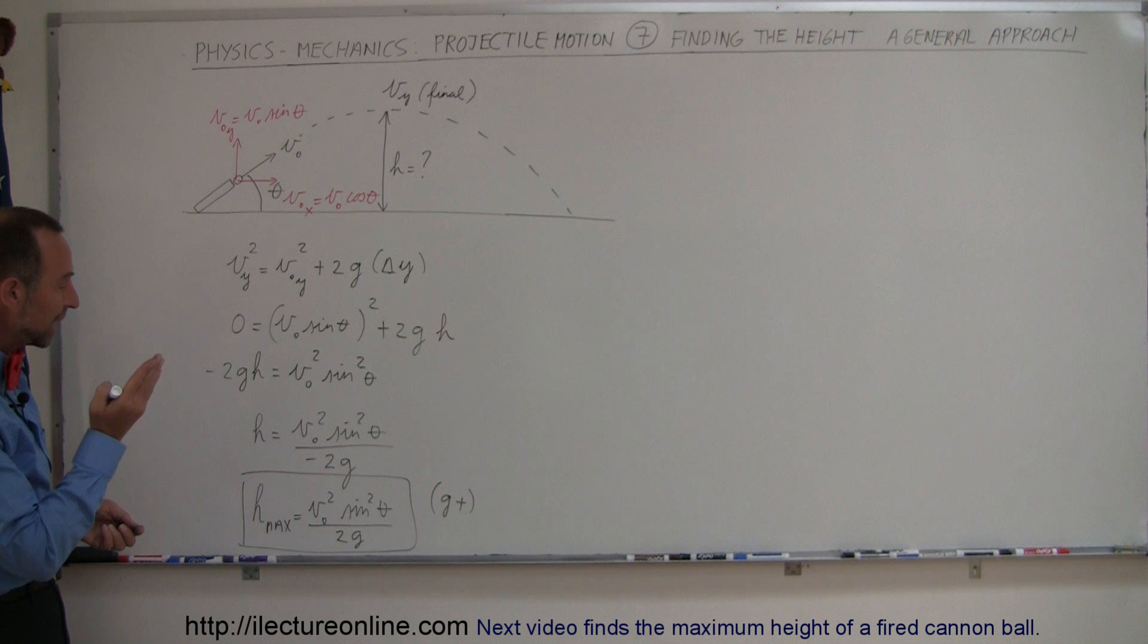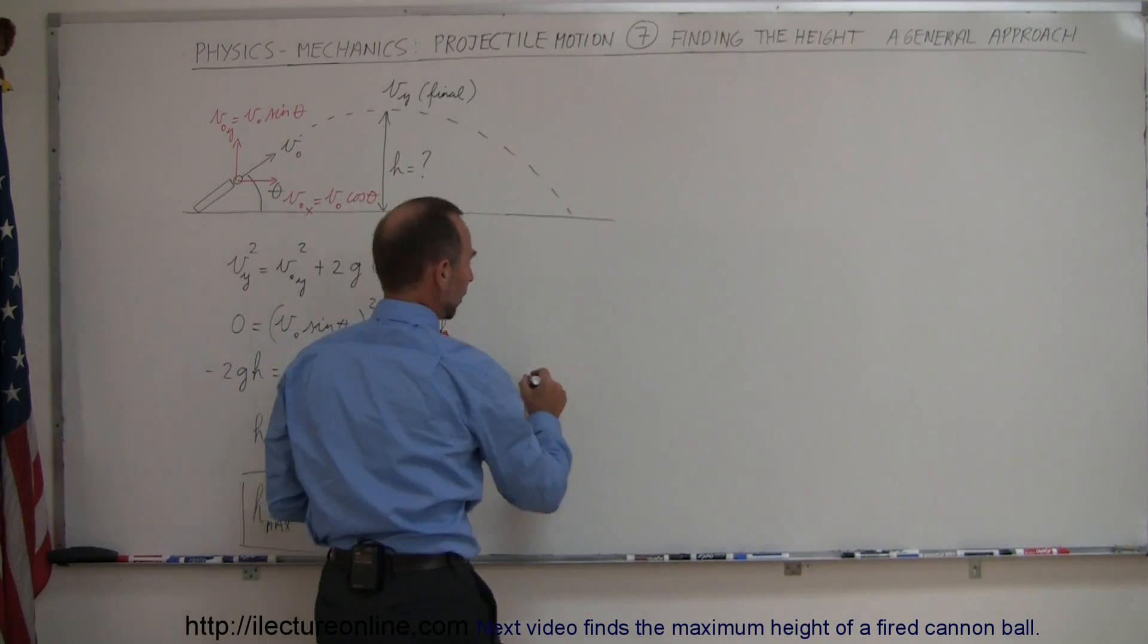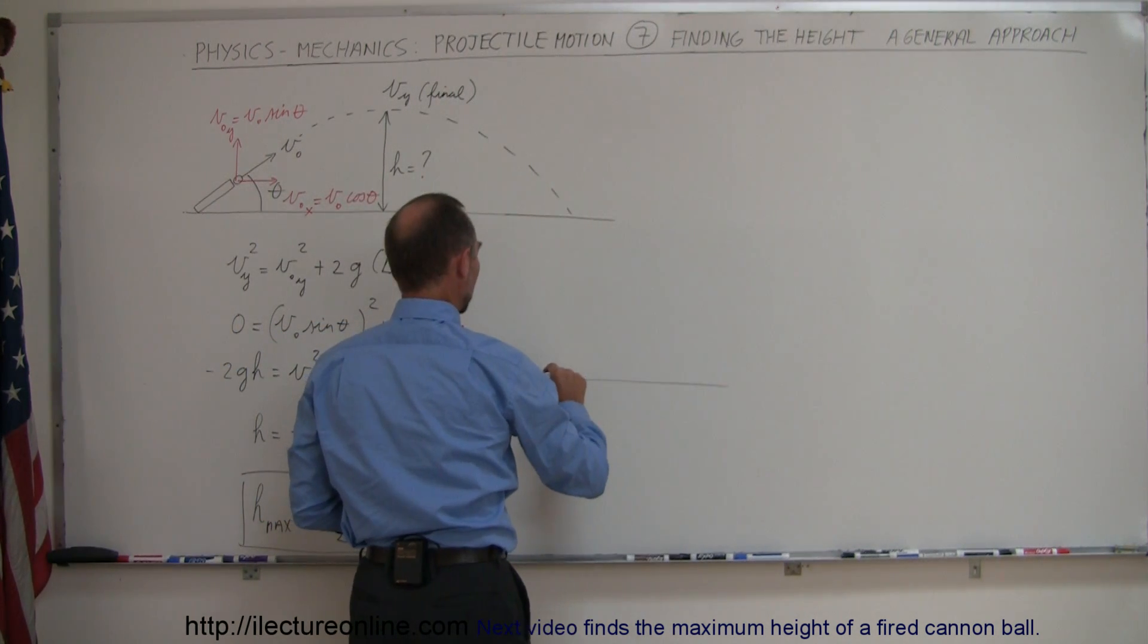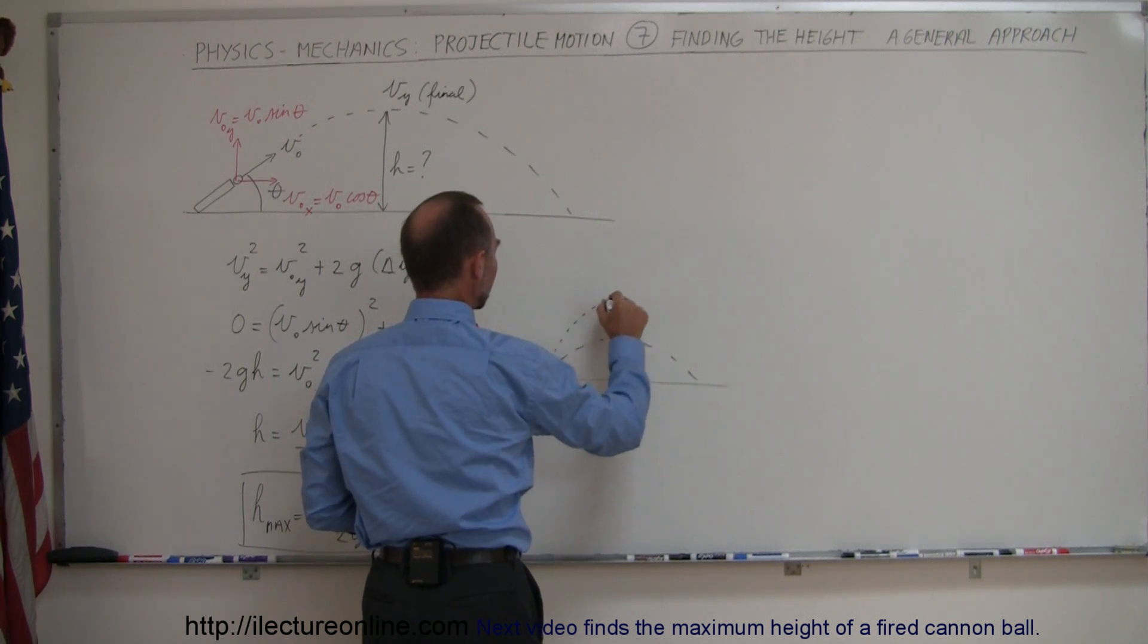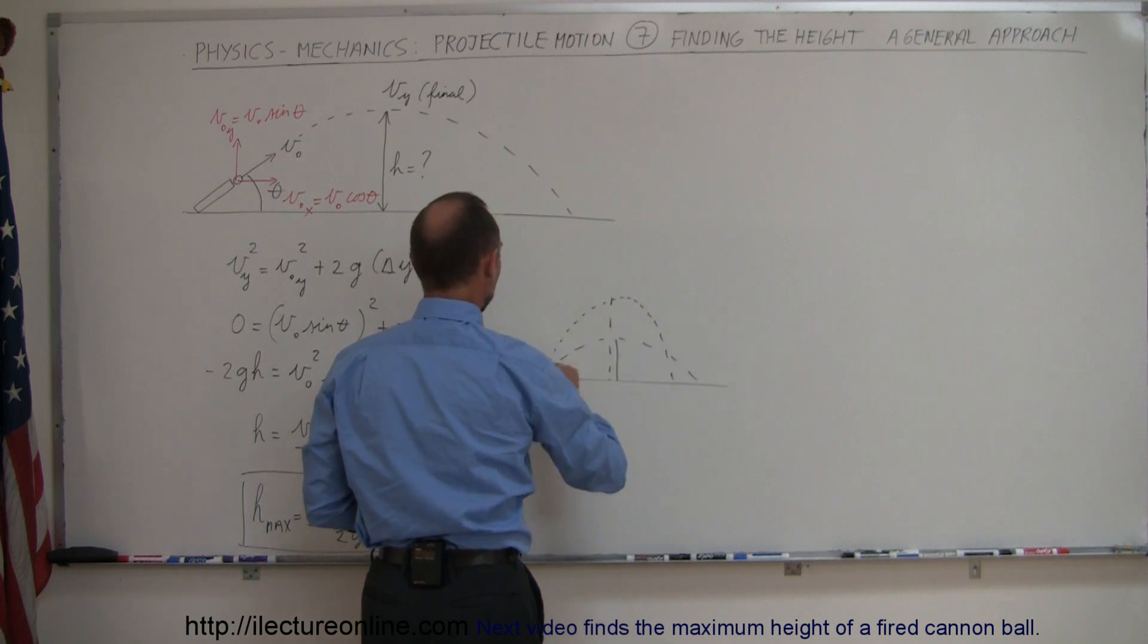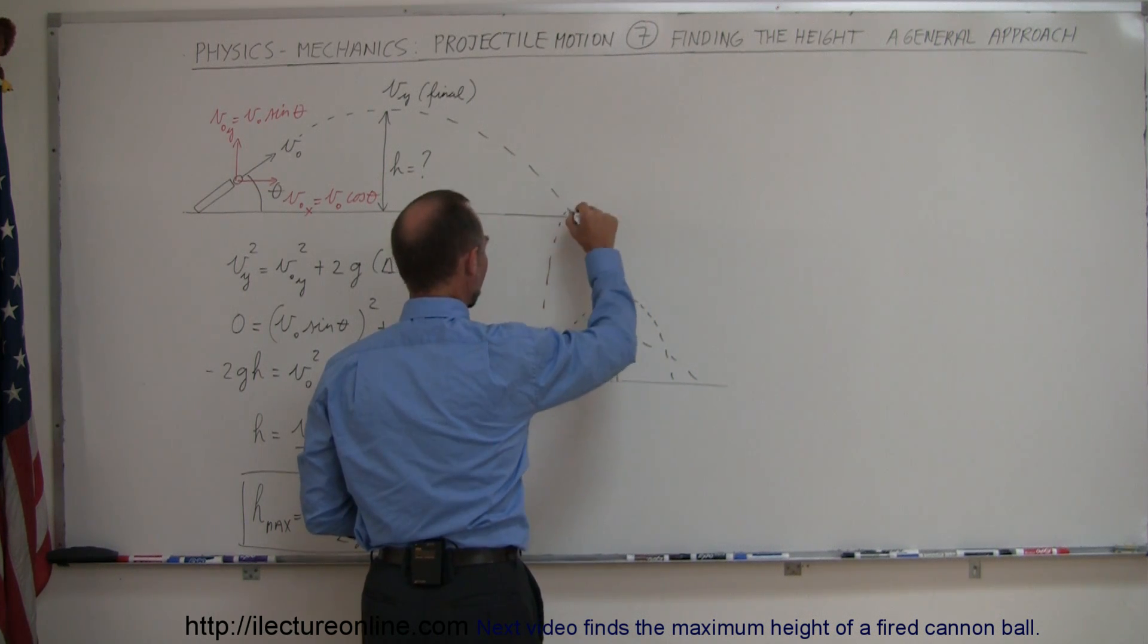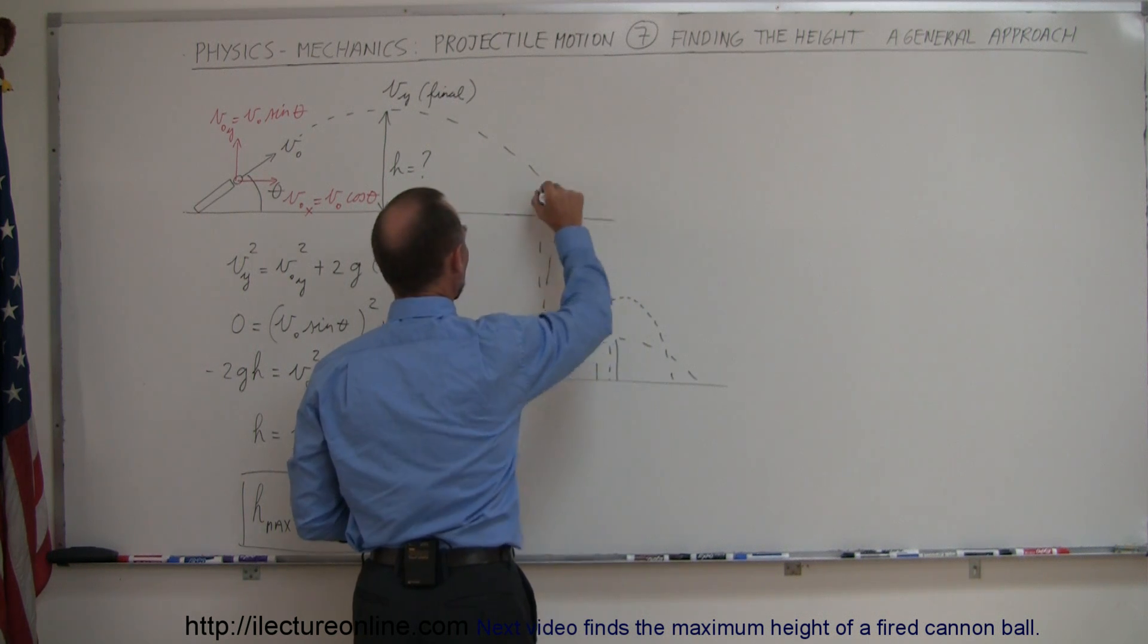So the greater the value of the angle, the larger the height will be in my projectile motion. So you can think of it like this. If the projectile motion is like this, you reach this height. If I shoot at a higher angle, it may not go as far, but it will go higher. If I shoot it up like this, it will go higher again. And finally, if I shoot it straight up, and then straight back down, it will reach its maximum height.